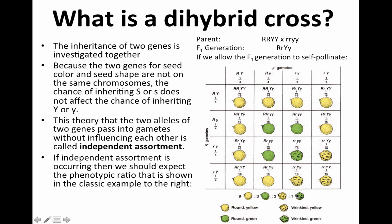You should understand that you always get 9 to 3 to 3 to 1 if both of the parents are heterozygous for both traits. If this is one of the parents, then you can see there are four possible gametes listed right here in this diagram. If both parents are like that, you end up with a 4 by 4 Punnett square, giving you this ratio of phenotype outcomes: 9 to 3 to 3 to 1. Nine of them have both dominant traits, only 1 out of 16 has both recessive traits, and you have 3 and 3 of the new combinations.